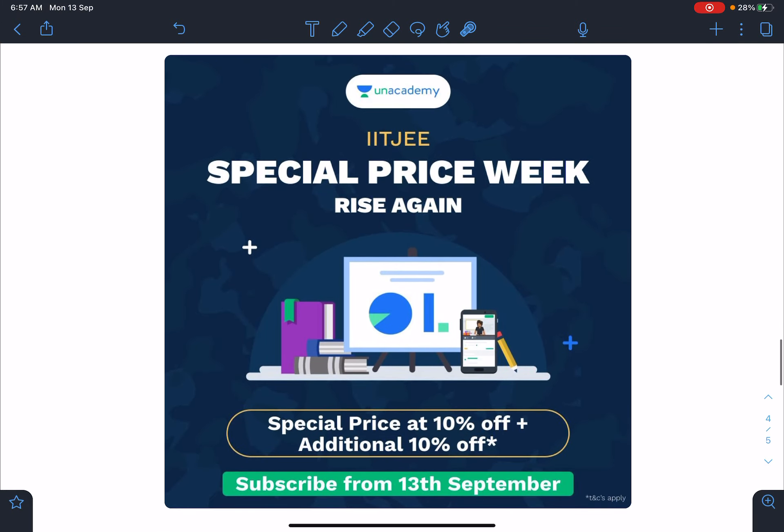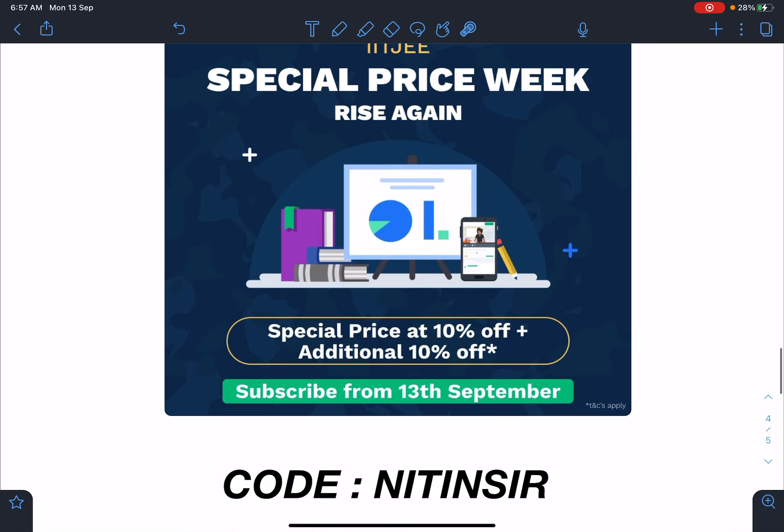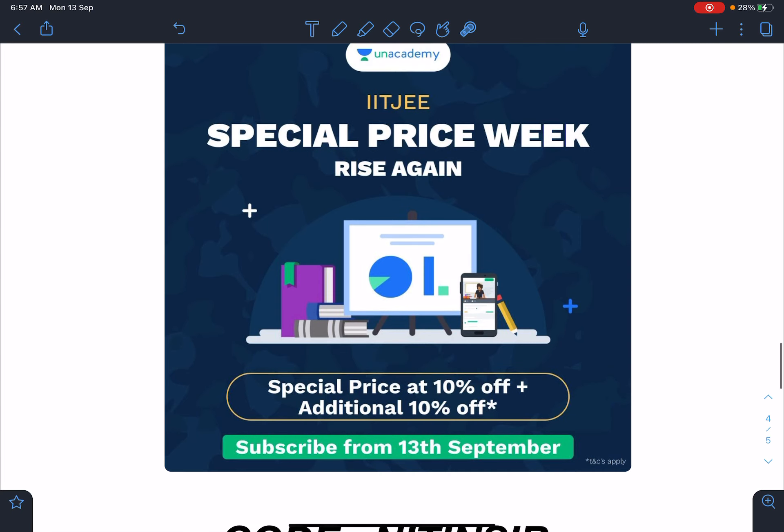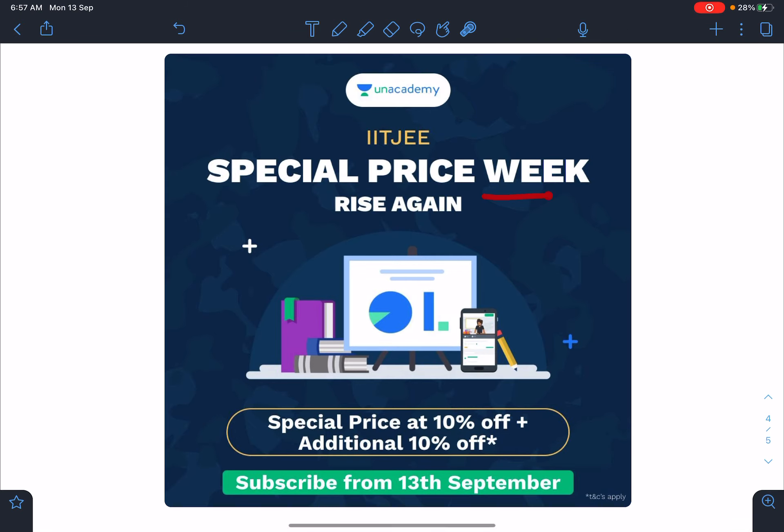And guys there is another announcement here that from 13 September onwards an academy subscription is reducing its prices. So there are some discounted prices it will be 10% off and if you are using the teacher's code in my case it is Nitin sir. It is up to you. You can get additional 10% off in your subscription. So it will be valid for a week I think right. So those who are interested they can go for it.